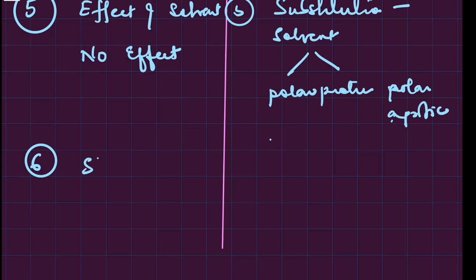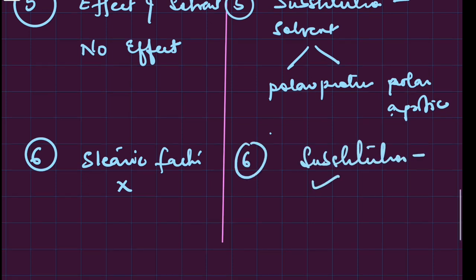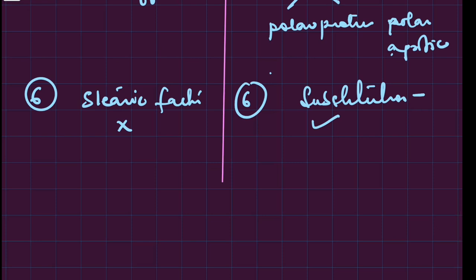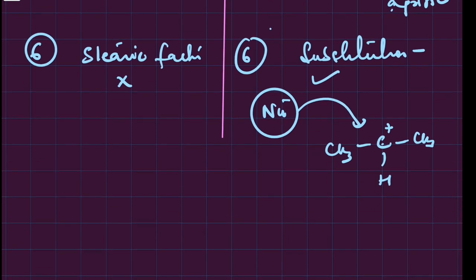Steric factors do not matter in elimination, whereas in substitution they do. The reason being, in substitution the nucleophile is attacking on the electrophilic carbon center. The nucleophile needs space to reach there, so if there are steric factors, it is going to be less facilitated. Whereas steric factors do not matter in elimination because the attack is on a small atom - hydrogen.